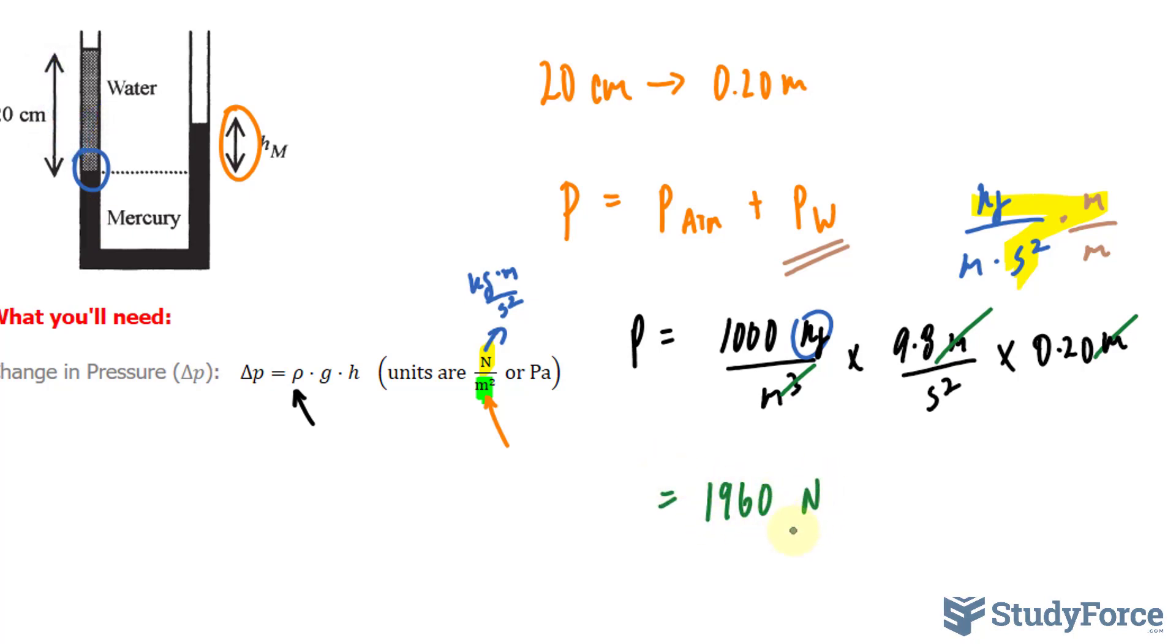So the pressure that the water exerts onto Mercury is 1,960 pascals, and it has to equal to the pressure here.